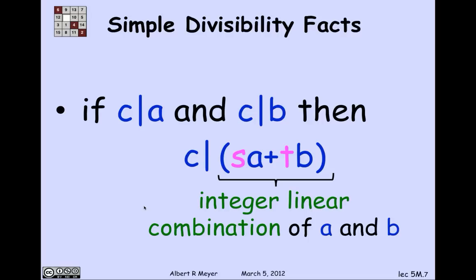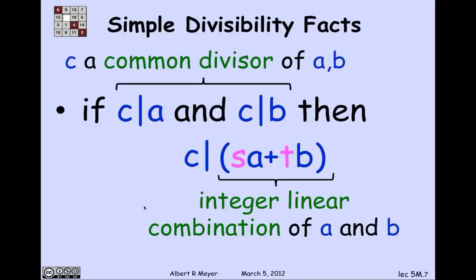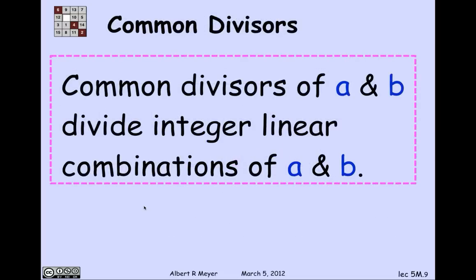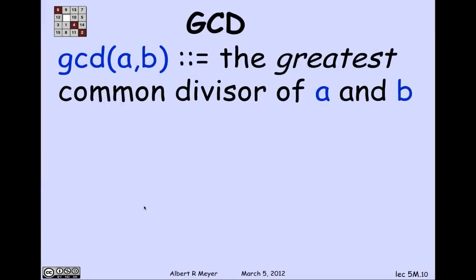A linear combination of A and B is what you get by multiplying them by integer coefficients S and T and adding them. So if C divides A and C divides B, then C divides any integer linear combination of A and B. When C divides two numbers, it's called a common divisor of those two numbers. Common divisors of A and B divide integer linear combinations of A and B — a good fact to file away.